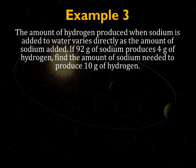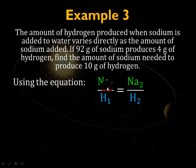A word problem. The amount of hydrogen produced when sodium is added to water varies directly as the amount of sodium added. If 92 grams of sodium produces 4 grams of hydrogen, find the amount of sodium needed to produce 10 grams of hydrogen. The first thing you want to notice in the problem is that it doesn't say anything about exponents or other relationships. So, you can assume a linear relationship between the amount of sodium added as the amount of hydrogen produced. Let's create a simple ratio.